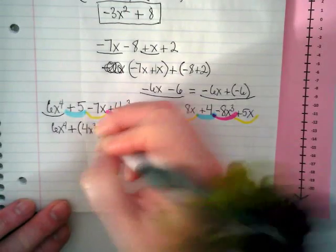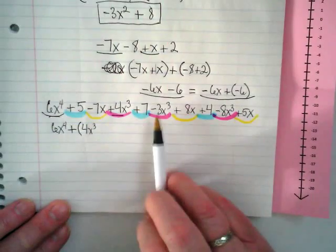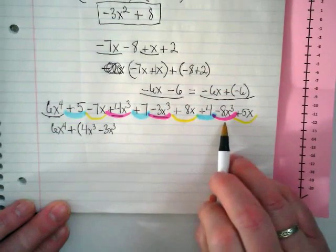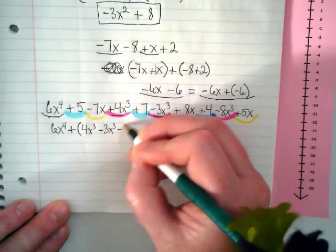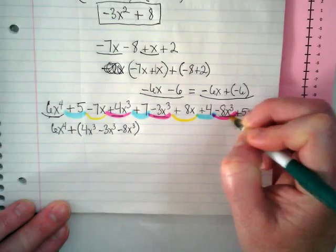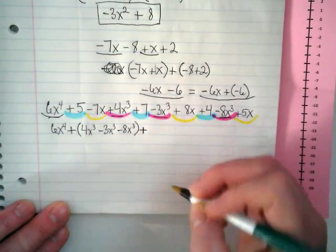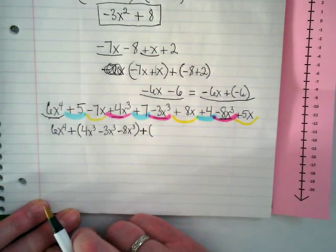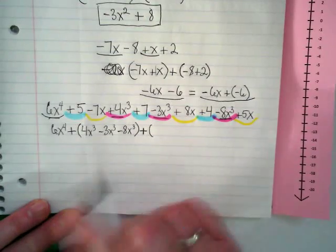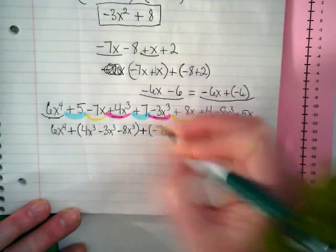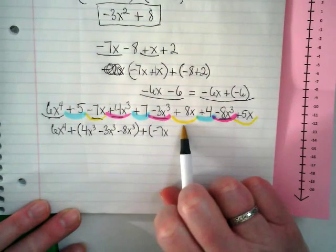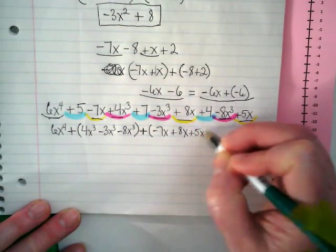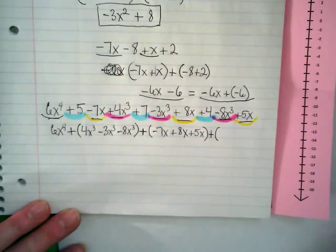Starting the grouping: 4x to the third, then negative 3x to the third, then negative 8x to the third — closing that parenthesis, with a plus 'and' sign. Then the yellow group still has an exponent, starting with negative 7x, plus positive 8x, and 5x. Then one more set of parentheses for the constants: 5 plus 7 plus 4. Notice I put lines underneath to show I'm not leaving anything out.